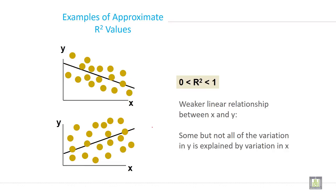Here, weaker linear relationship between X and Y, because this is not as strong, this is very weak and going towards the left, towards the right downward. So it is negative. Some but not all of the variation in Y is explained by variation in X.